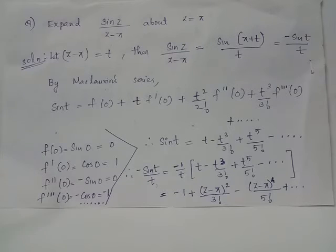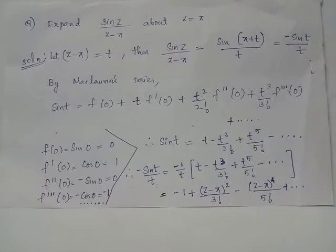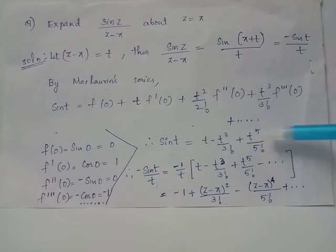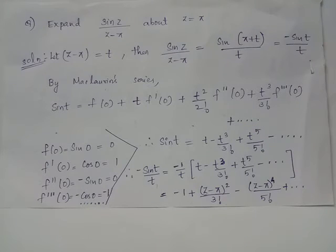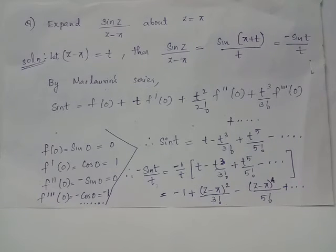Substituting all these values into the Maclaurin series expansion of sin(t), we obtain sin(t) = t - t³/3! + t⁵/5! - ... Now writing -sin(t)/t using this expansion, we have -sin(t)/t = (-1/t) times the series, which gives -1 + t²/3! - t⁴/5! + etc.